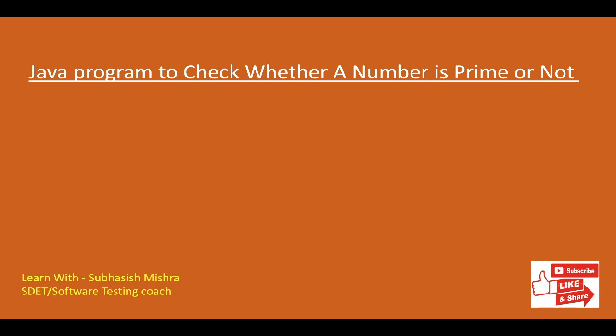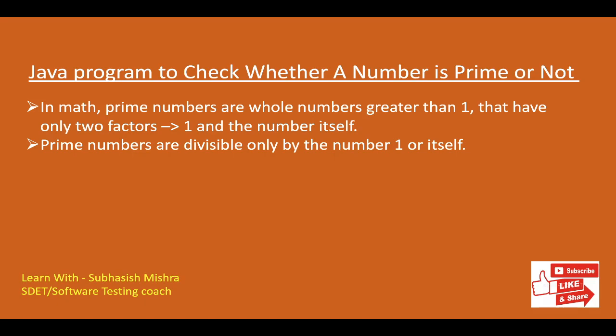So first thing is: what is a prime number? In math, prime numbers are whole numbers greater than 1 that have only two factors — 1 and the number itself. Prime numbers are divisible only by 1 and themselves. For example, 2 is divided by 1 and 2, so it is a prime number.